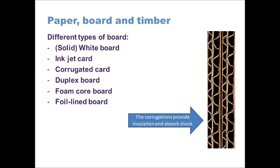The different types of board you might encounter in the exam include solid whiteboard, inkjet card, corrugated card, duplex board, foam core board, and foil lined board. Solid whiteboard is a very high quality, pure white board used for high-end packaging or as a primary packaging printing surface. Inkjet card is designed to go into an inkjet printer; like marker pad paper, it is treated to prevent ink from bleeding and spreading, which would create a smudgy, poor quality outcome.